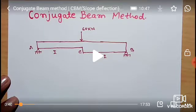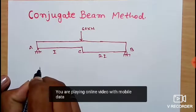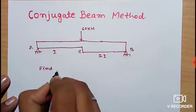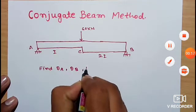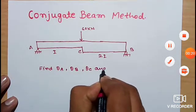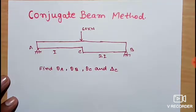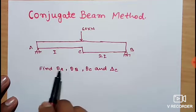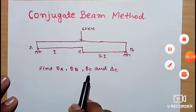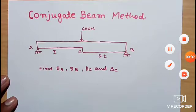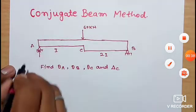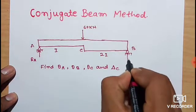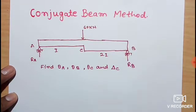Here is the given simply supported beam for which we have to find out the deflection and slope. We have to find out theta A, theta B, theta C, and also the deflection delta C — the slope at A, B, and C, and also the deflection at C. This is our simply supported beam, with reaction force Ra and reaction Rb.